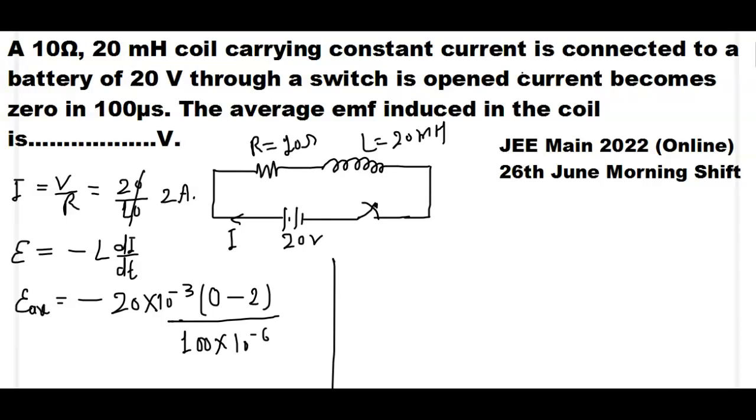So average EMF is 0 minus 2, the value is minus 2. Minus 2 into minus 20 multiply, then the value becomes 40 into 10 to the power minus 3 divided by 100 into 10 to the power minus 6. Here 0s cancel, 10 to the power minus 3.